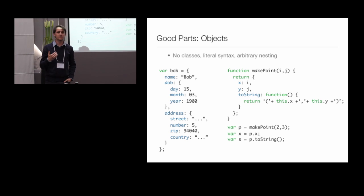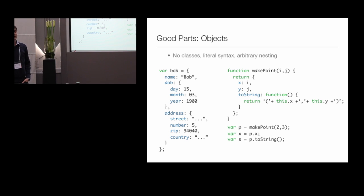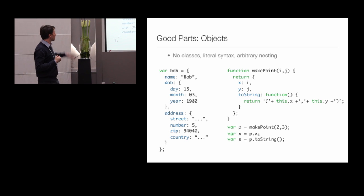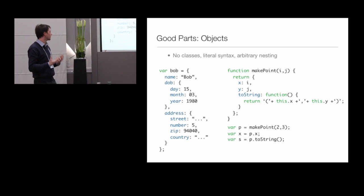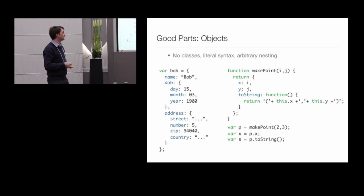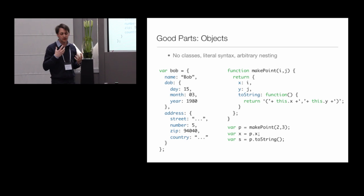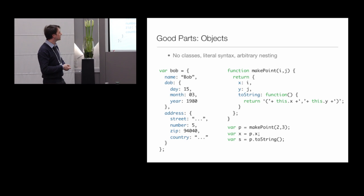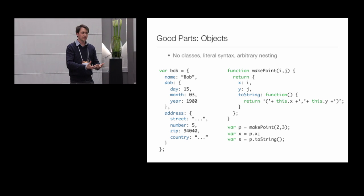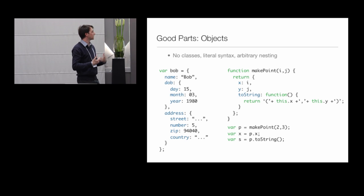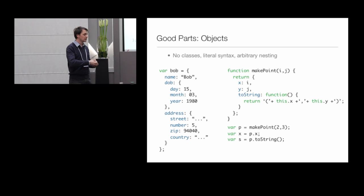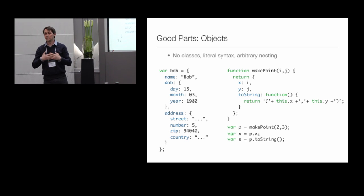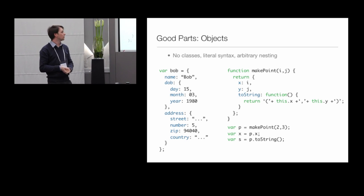The second very good part of JavaScript is its support for object-oriented programming, particularly the way it deals with objects and object literals. I declare an object called Bob with three properties — name, date of birth, and address — where the latter two are nested objects. You can write this down pretty concisely. On the right, you can combine objects with functions cleanly: a function called makePoint takes i and j, and every time you call it, it returns a fresh object with properties x, y, and toString. You can access the x property or call the toString method using familiar syntax from C or Java.